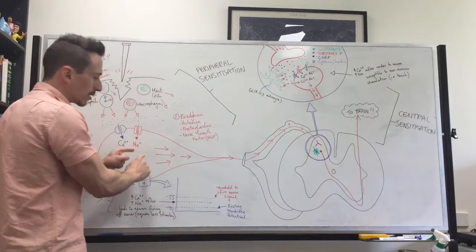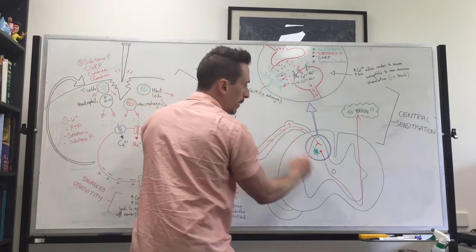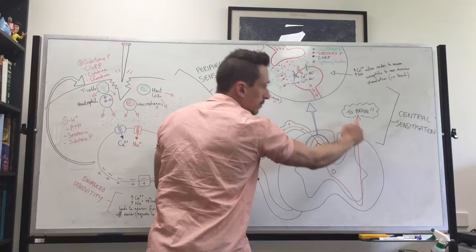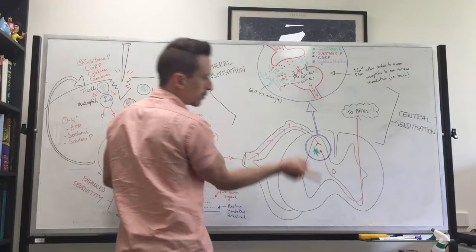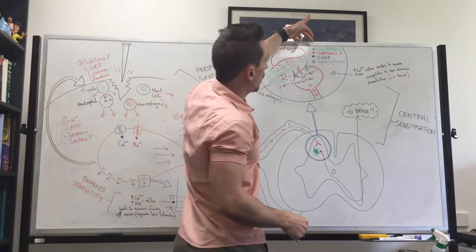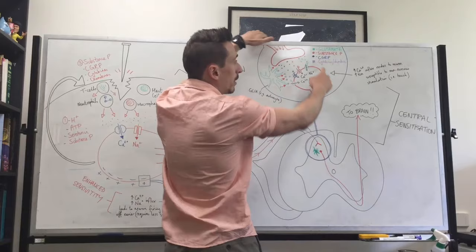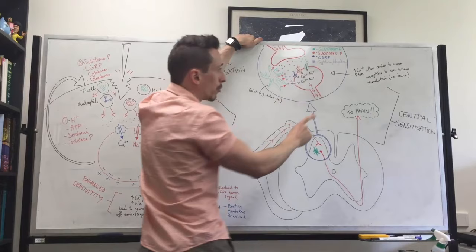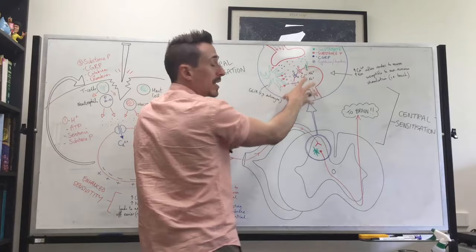Now let's look at what happens once the signal enters the spinal cord. This is the first pain neuron speaking to the second pain neuron in the dorsal gray horn of the spinal cord — it travels down the arm into the cord, the second neuron crosses to the other side and goes up to the brain. The stimulated first neuron releases glutamate, substance P, CGRP, cytokines, and chemokines, which bind to receptors on the second pain neuron, open channels, let calcium and sodium in, and continue sending the action potential up to the brain.